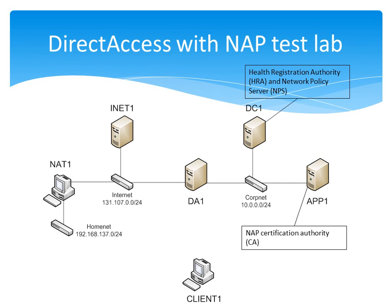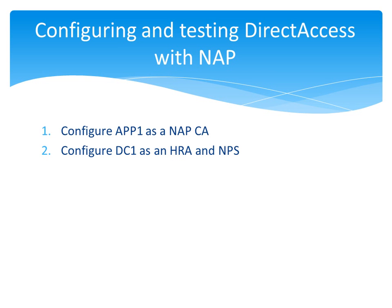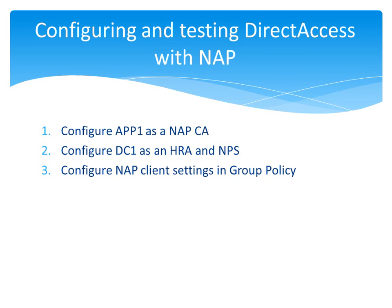Note that we are not adding any additional servers to this test lab. To configure and test, we're going to configure APP1 as the NAP CA, configure DC1 as the HRA and NPS, and then configure NAP client settings and group policy — specifically on the group policy object for DirectAccess clients that already exists. We're going to enable a specific NAP enforcement client and configure it with the URL of the HRA running on DC1.